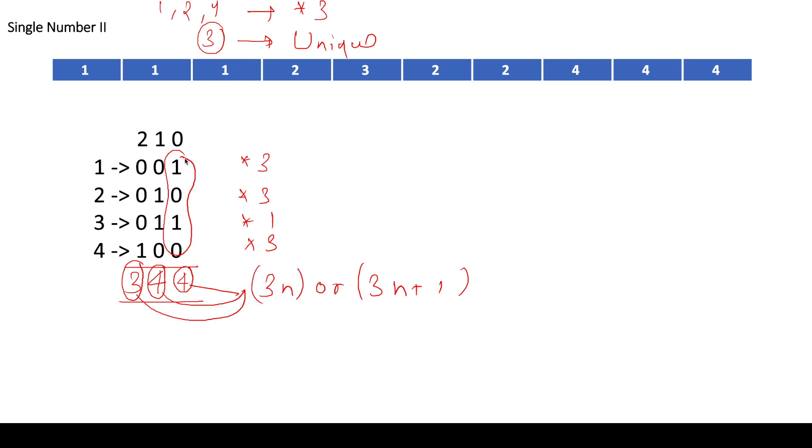See, if we are getting a 1 in a number which is present three times, so we are getting a contribution of 3. So we will always get the contribution in the multiples of 3 from the numbers which are present 3 times. Only the number which is present one time, in case it is contributing, in that case only we are getting this 3n plus 1. Because from all the other numbers, we are getting a contribution of 3. So it is going to be equal to 3n.